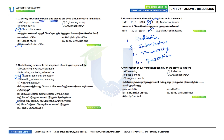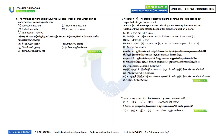Fourth question: Orientation at every station is done by backsighting on the previous station. Option B is the correct answer. Fifth question: The method of plain table survey suitable for a small area which can be commanded from a single station — small area, single station — that means the radiation method. Option B is the correct answer.